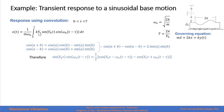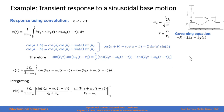We name a as v sub zero times τ and b as ωₙ(t − τ), yielding this expression. We then substitute the product of two sine functions with the subtraction of two cosine functions, obtaining the resulting integral.